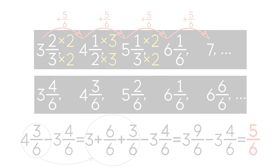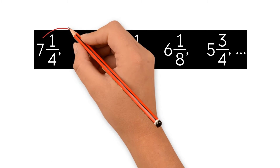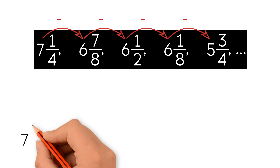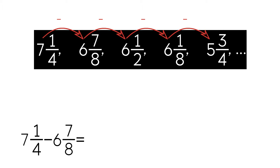So the rule is to add 5 over 6. Let's do another example. As you can see, this sequence is decreasing — the numbers get smaller. To find the rule, we need to take two consecutive terms. We subtract the smaller term from the larger term to get the rule. Let's take 7 and 1 fourth minus 6 and 7 eighths.